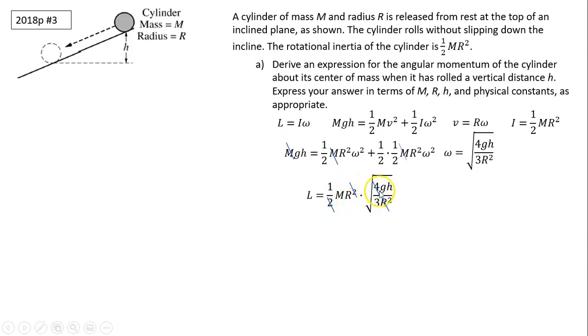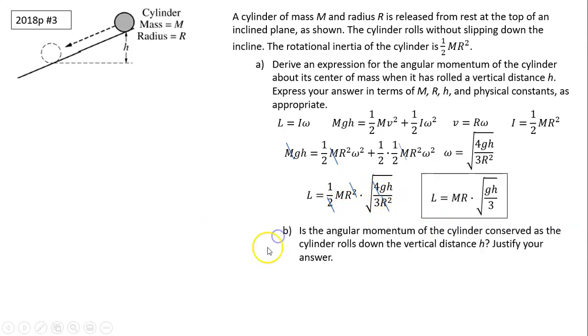So what do you have? mr times square root of gh over 3. And that is your L. Part B: Is the angular momentum of the cylinder conserved as the cylinder rolls down a vertical distance h? Justify your answer.